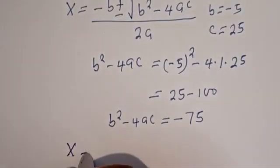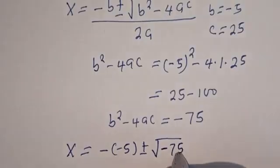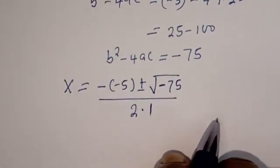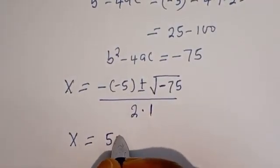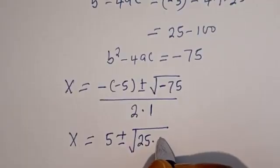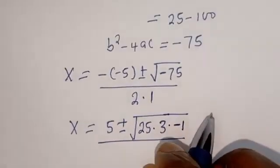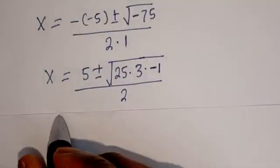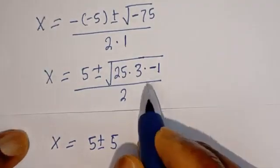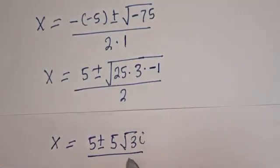Then we can plug this into the formula: x is equal to minus (minus 5) plus or minus square root of minus 75, divided by 2 times 1. Then x is equal to 5 plus or minus square root of minus 75. The square root of minus 75 can be written as square root of 25 times 3 times minus 1, divided by 2. Square root of 25 is 5, square root of minus 1 is i, and we have root 3, giving 5i√3, divided by 2.